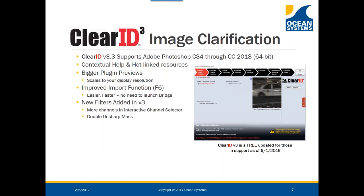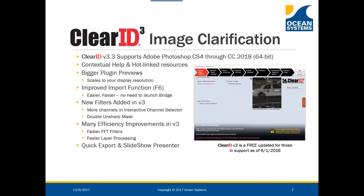We added new filters in Clear ID version 3, including Double Unsharp Mask under the sharpening tab, and more channels in our interactive channel selector for interrogating images and video. Efficiency improvements in version 3 include FFT filters performing much faster, layer stack processing much faster, and many keyboard shortcuts throughout the interface that save tremendous time when processing. We added quick export capabilities on Tab 7 for quickly exporting the top layer, all layers, or only active layers as uncompressed TIFF or PNG images. With Clear ID version 3.3 we can now record Clear ID filters as Photoshop actions — a time-saving feature for hotkeys and batch processing.